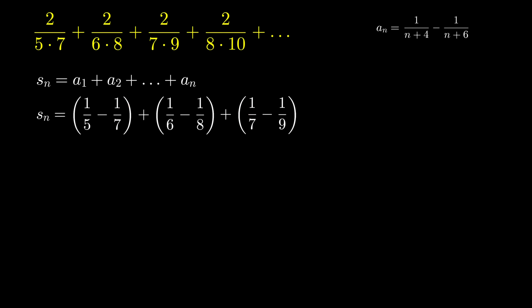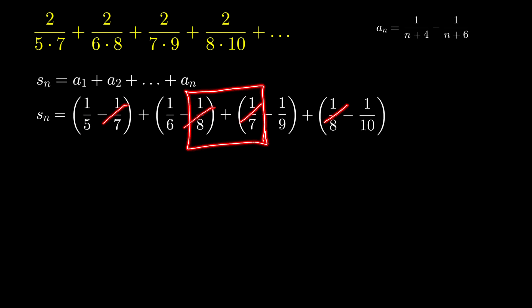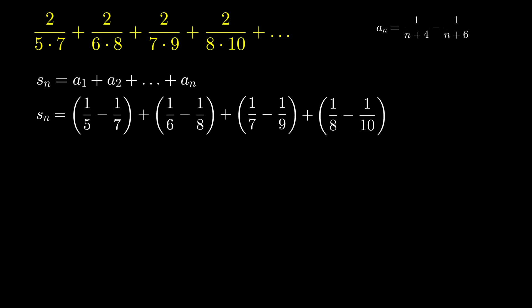Writing the fourth term, we see that negative 1 over 7 cancels with positive 1 over 7, and negative 1 over 8 cancels with 1 over 8. The sum then depends only on 1 over 5, 1 over 6, negative 1 over 9, and negative 1 over 10. If we write the fifth term, 1 over 9 minus 1 over 11, negative 1 over 8 and 1 over 8 cancel, and negative 1 over 9 and positive 1 over 9 cancel. Again our sum depends on these two and these two numbers.